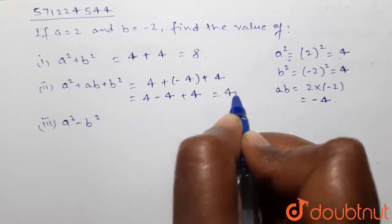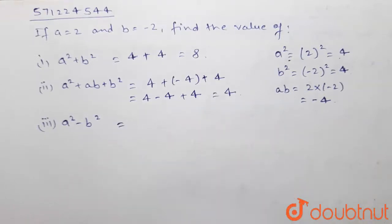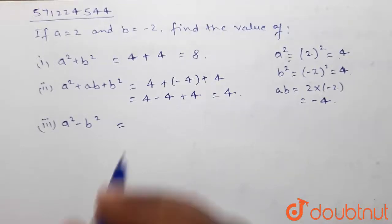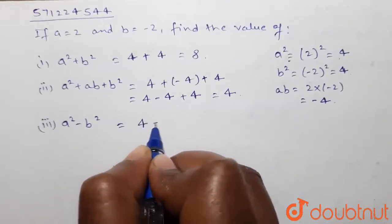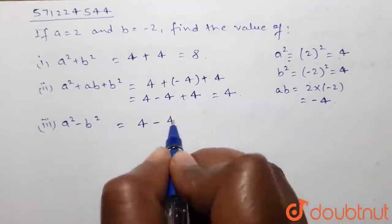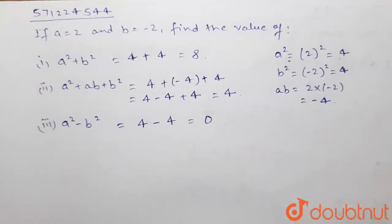Now in the third part we have to find the value of a² - b². Value of a² is 4, minus value of b² which is 4, so it will be 4 - 4 which is equal to 0. So these are the values of the given question. Thank you.